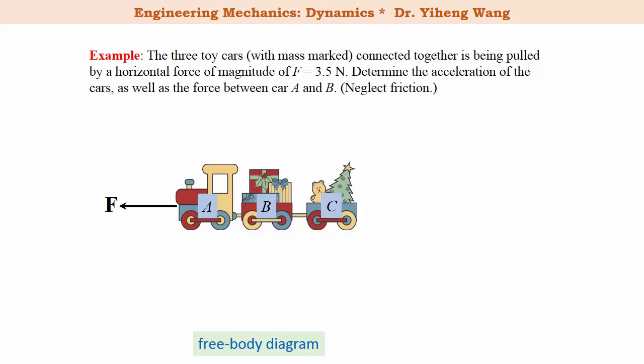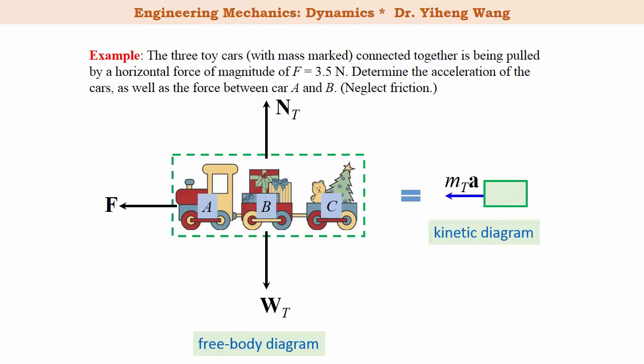To solve the first part of the problem, we need to draw the free body diagram of this entire car set as one system. Therefore we need to include all the external forces acting on this system. We have the applied force, 3.5 Newton. We also have the total weight force, as well as the total support force. And this completes the free body diagram for the system. Therefore we can draw the corresponding kinetic diagram showing the horizontal inertia force, which equals the total mass times acceleration. Because there is no acceleration along the vertical direction.